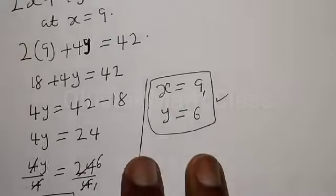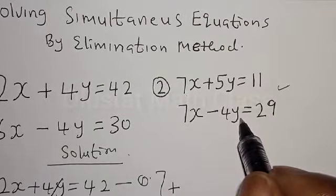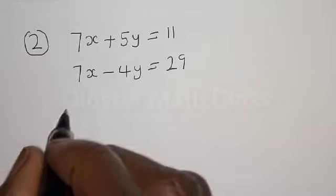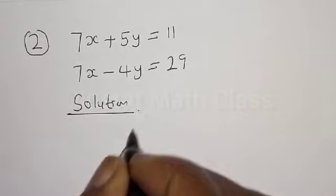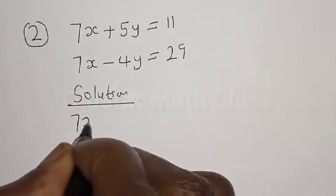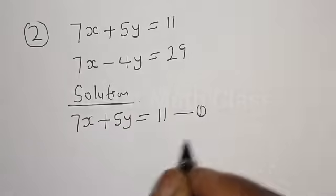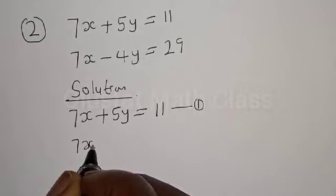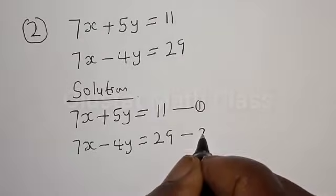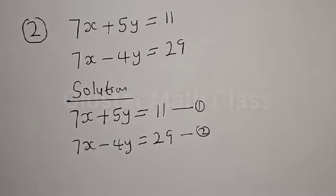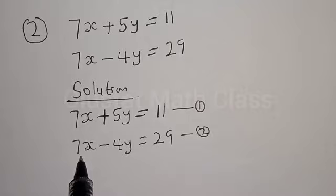Now let's quickly solve the second question using the elimination method. The second question is 7x plus 5y is equal to 11, and 7x minus 4y is equal to 29. We have equation 1: 7x plus 5y equal to 11, and equation 2: 7x minus 4y equal to 29. We can see that the coefficient of x is 7 in both equations.